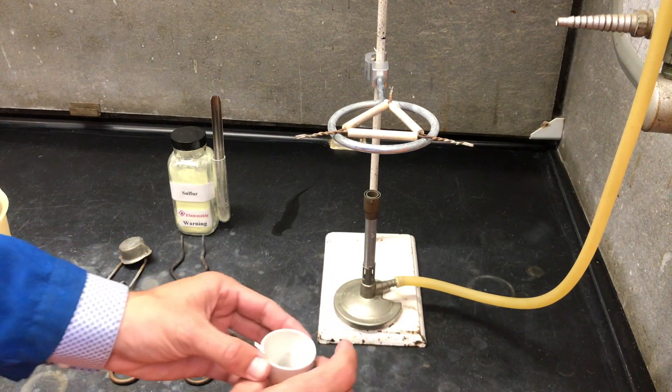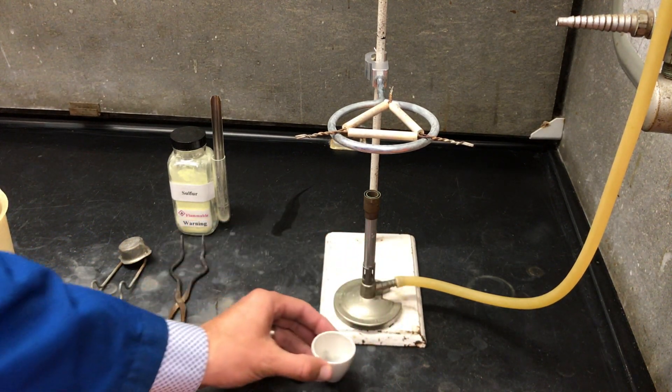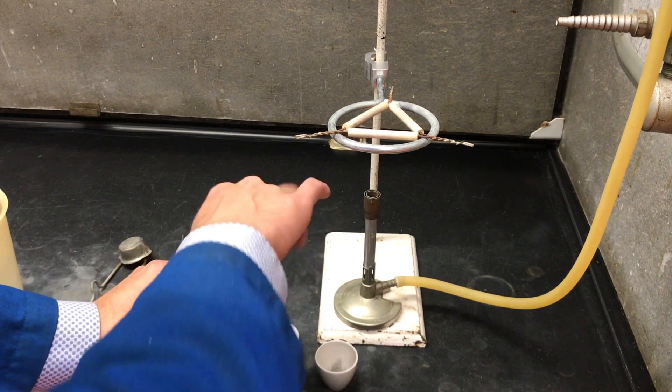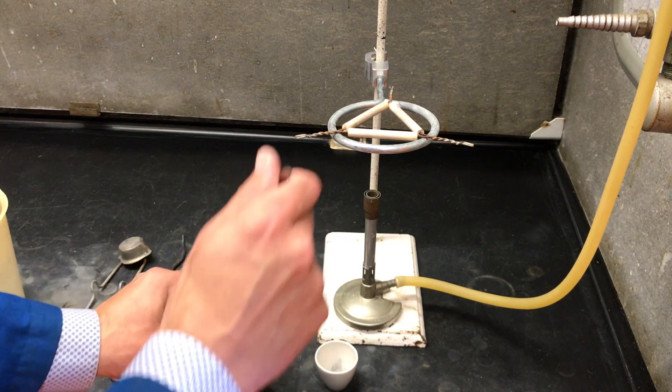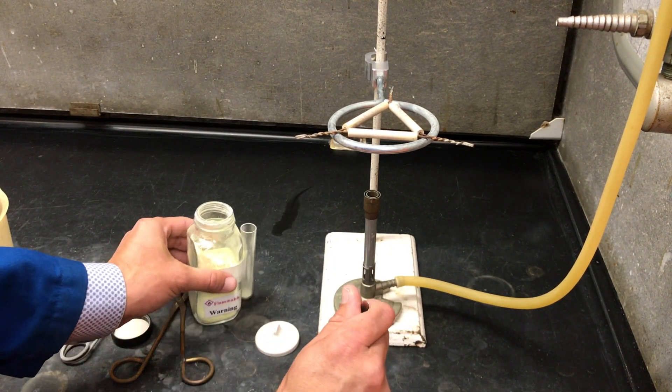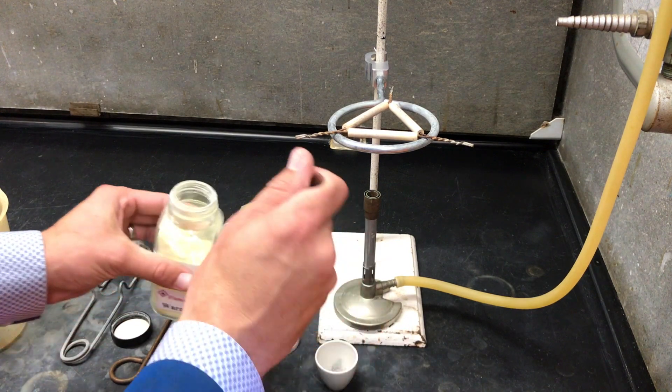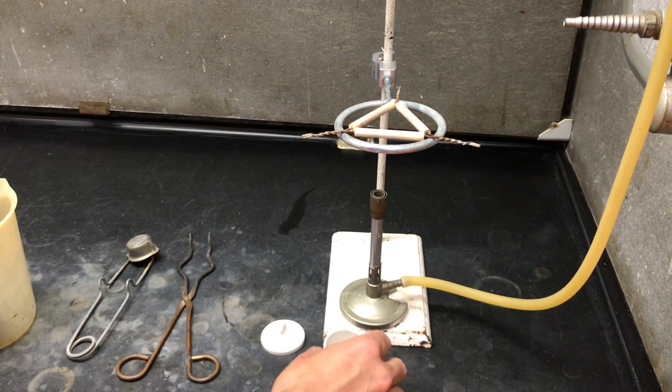We'll add enough steel wool to cover the bottom of the crucible and carefully sprinkle enough sulfur to cover the iron. Carefully put away our reactants.